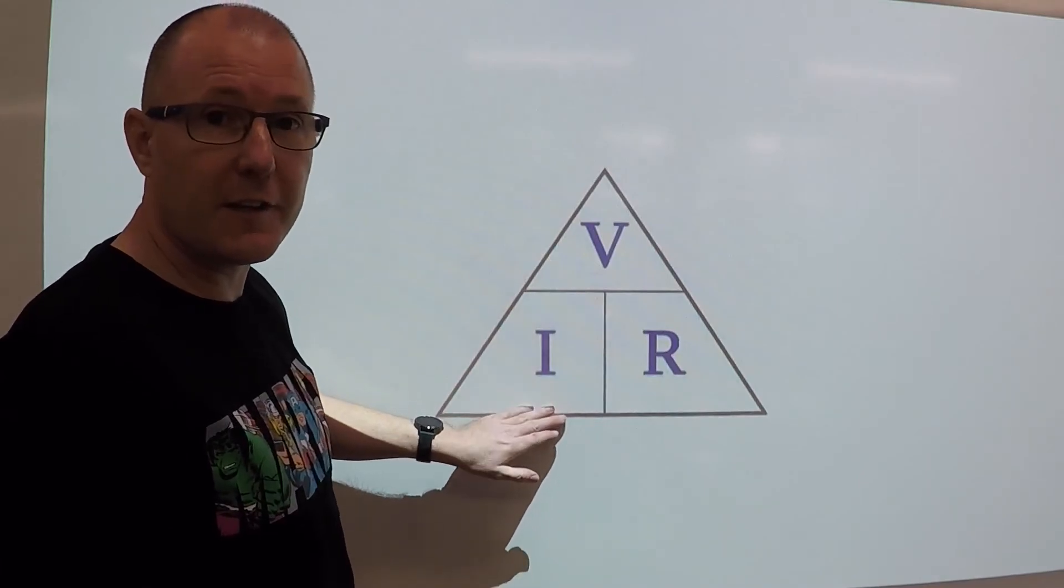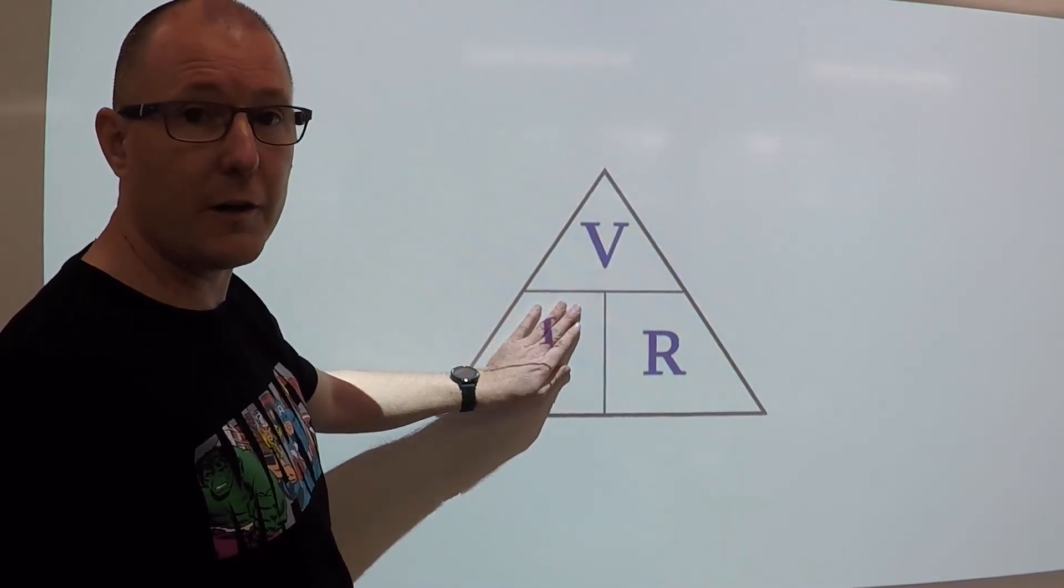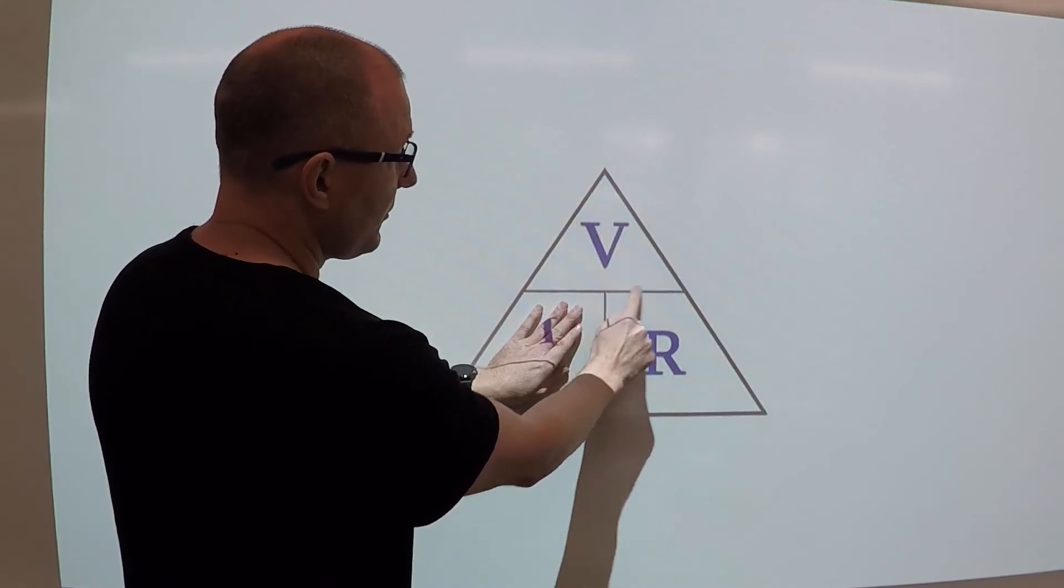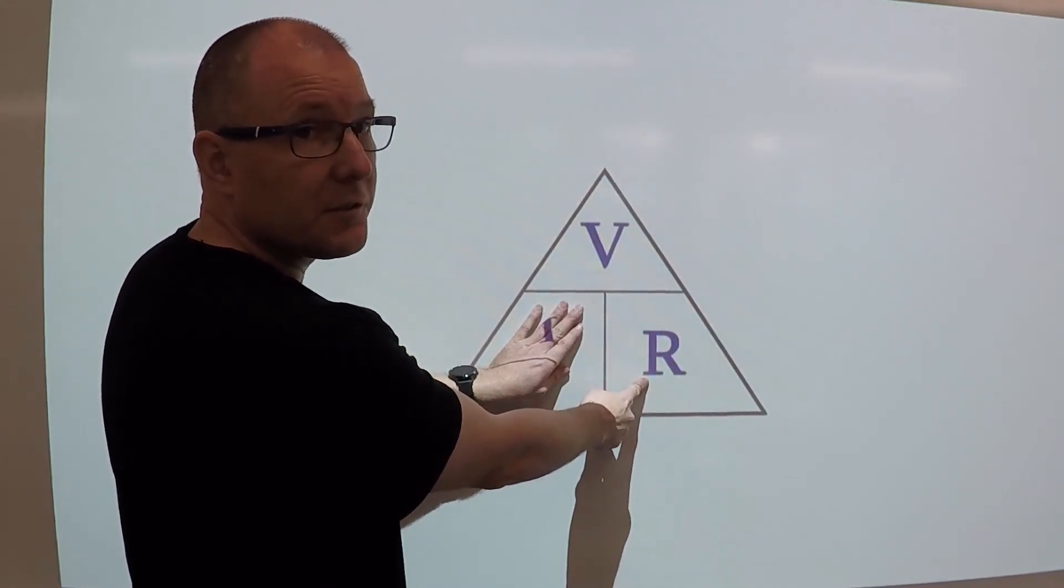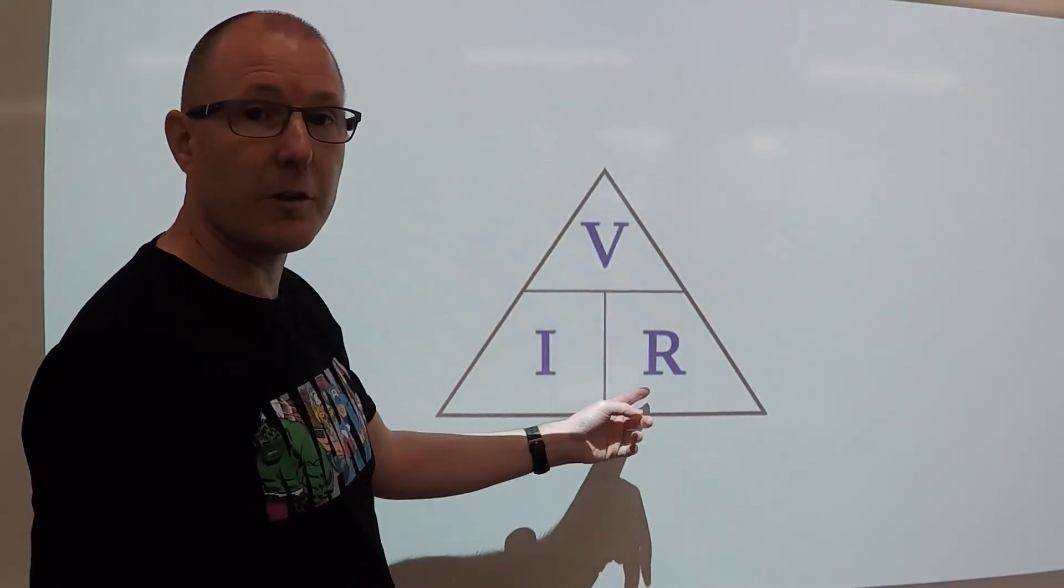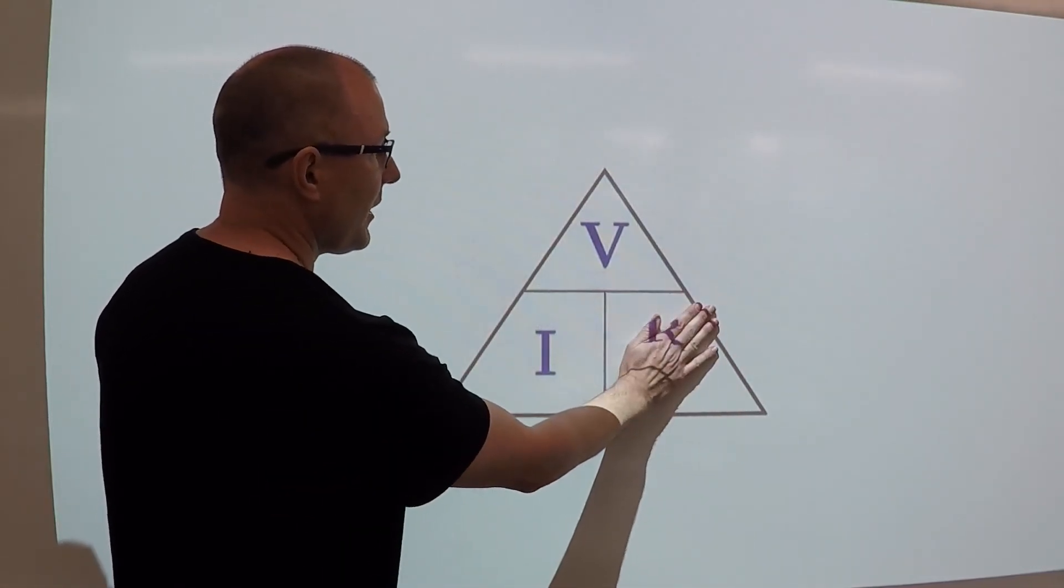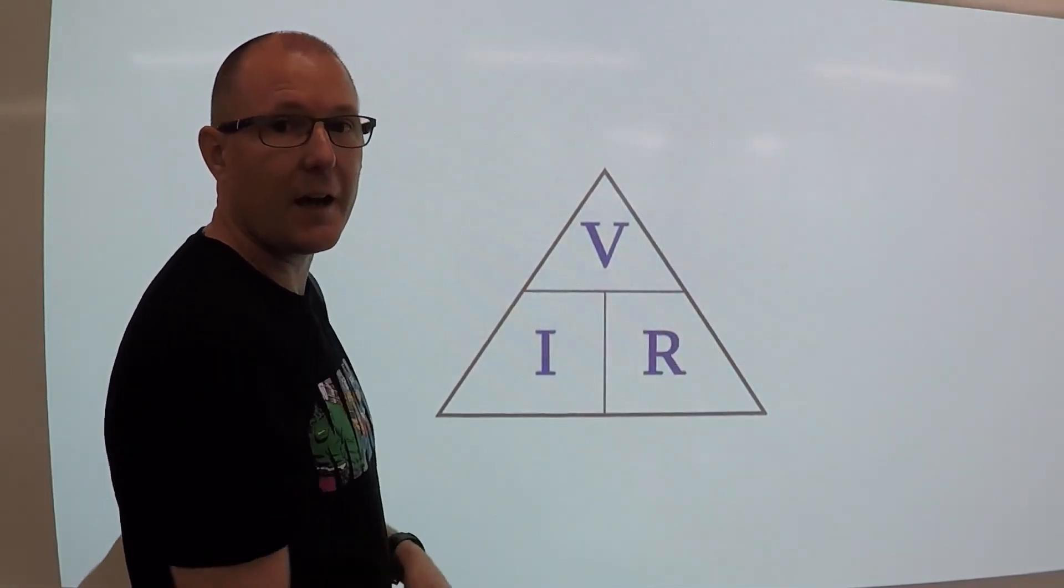If we're looking for the current, we cover I, which is the current, and we've got V divided by the resistance. Or if we're looking for R, we just cover the R, then we've got the voltage divided by the current.